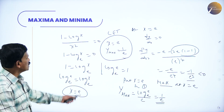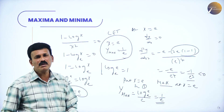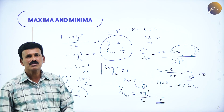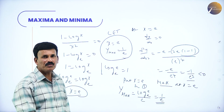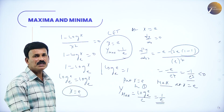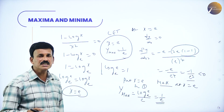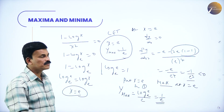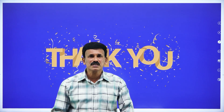The last problem: Find the maximum value of y equals log(x)/x. Differentiating: dy/dx equals (1 minus log x)/x². Setting dy/dx equal to 0 gives x equals e. At x equals e, d²y/dx² equals minus 1/e³, which is negative, so the function is maximum at x equals e and the maximum value is log(e)/e equals 1/e. These are very important problems for your CET examination. That's all for the day; we'll meet with a different concept in the next class.